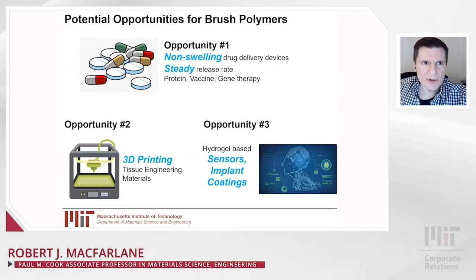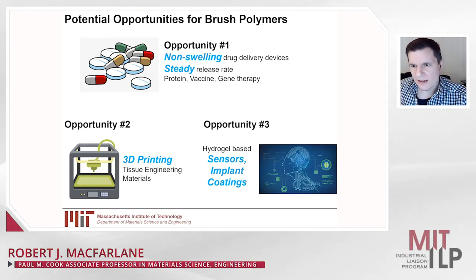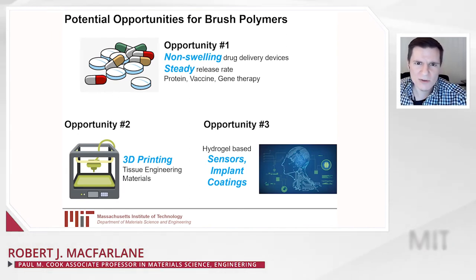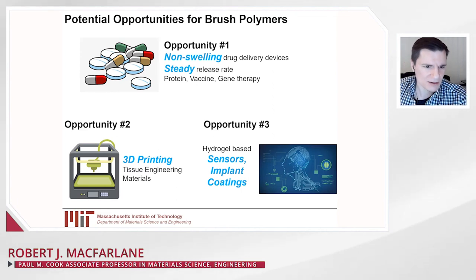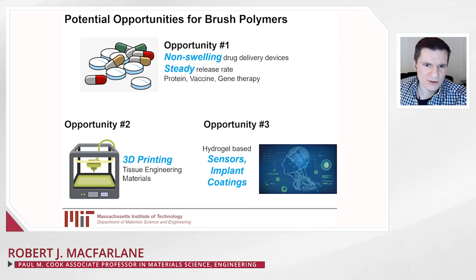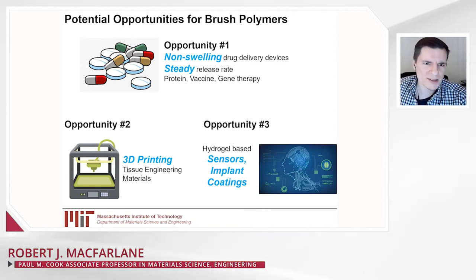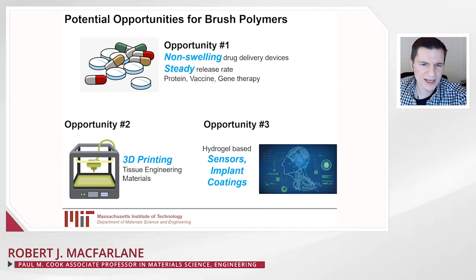As a result of these beneficial properties, bottle brush materials are potentially beneficial for non-swelling drug delivery devices — injected into the human body, they don't swell and don't put pressure on nearby tissues. These would be beneficial for steady release of proteins, vaccines, or gene therapy materials. Because they rapidly form, they can be 3D printed for tissue engineering scaffolds with the mechanical and chemical properties of a traditional hydrogel. Lastly, they can be used as coatings for implants or devices put into the human body to prevent inflammatory responses.